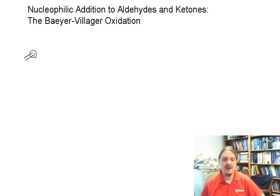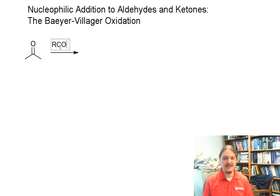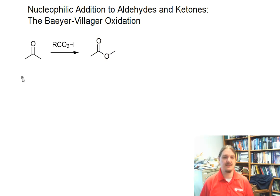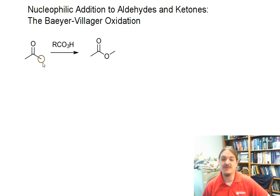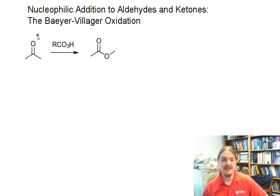In this video, I'm going to talk about the Baeyer-Villiger oxidation, which is a reaction of aldehydes and ketones with some sort of peroxy-carboxylic acid. The outcome of this reaction is an ester. I'm going to start off talking about the basics of the reaction and present its mechanism, using acetone as my ketone. In the next video, we'll talk about how to predict the outcome with different kinds of aldehydes and ketones.